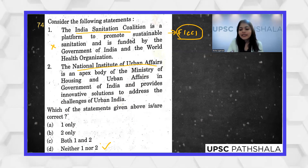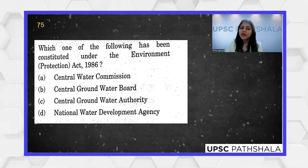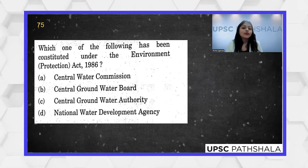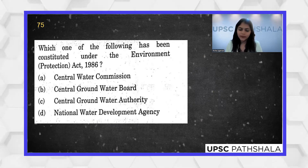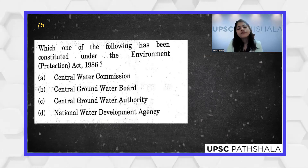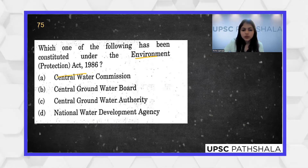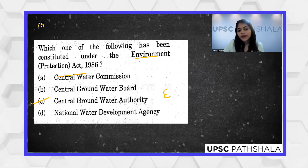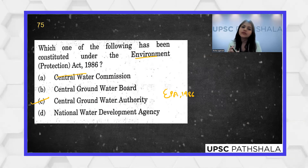Which of the following has been constituted under the Environmental Protection Act 1986? For any body that appears in the news, ask yourself three questions: is it a constitutional body, a statutory body, or an executive body? The Environmental Protection Act 1986 means it is a statutory body. The Central Groundwater Authority is a statutory body set up under the Environmental Protection Act 1986, making C the correct answer.